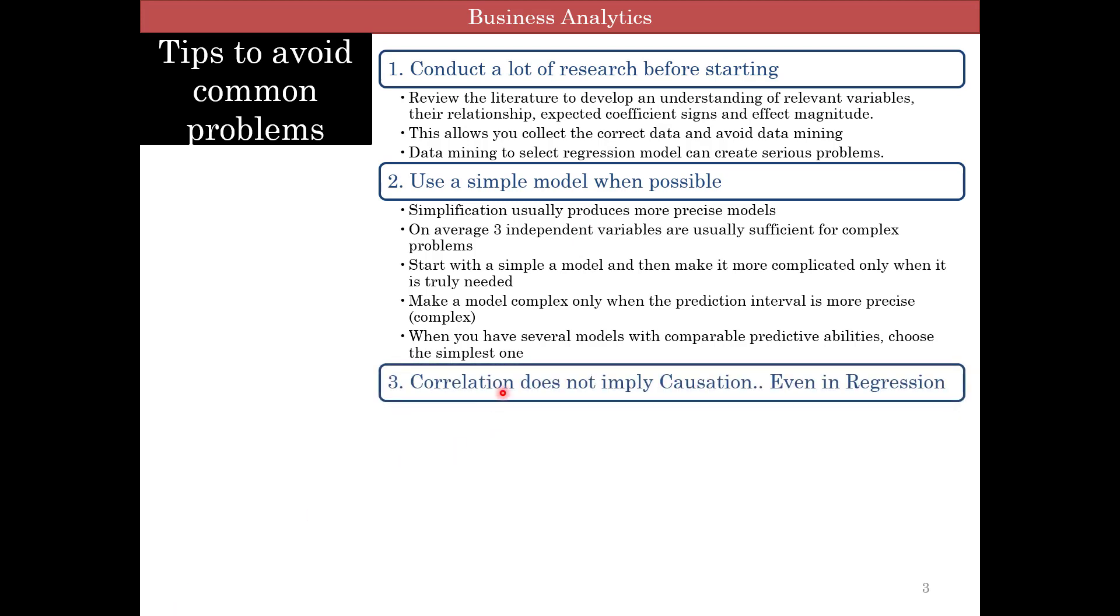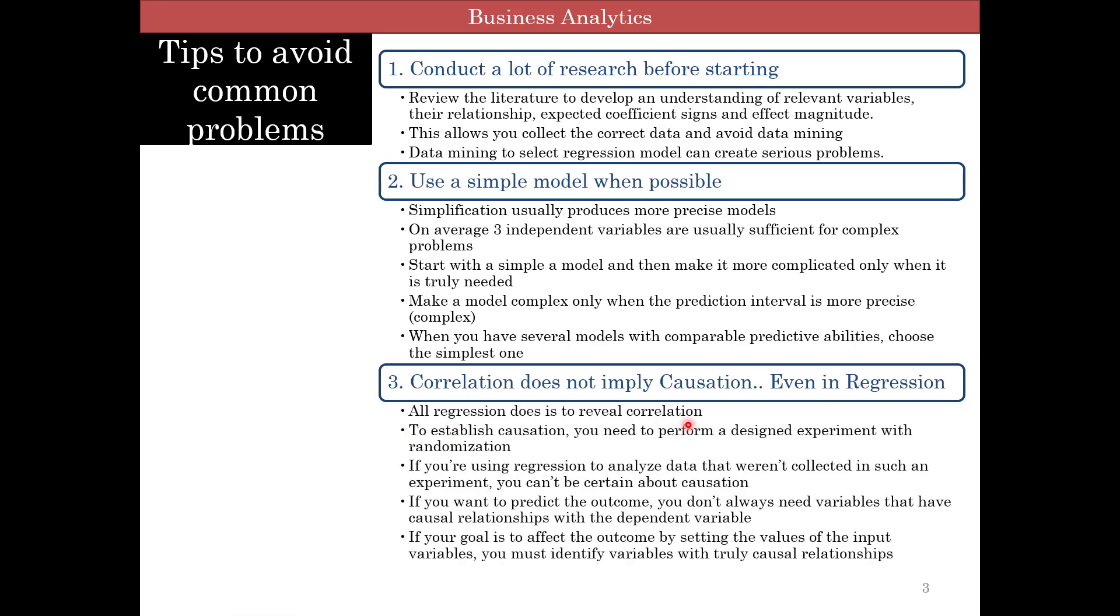Third, most important, just because something is statistically significant does not mean that one causes the other, even for regression. All regression does is reveals correlation. To establish causation, you need to perform a design experiment with randomization. If you're using regression to analyze data that wasn't collected in an experiment, you cannot be certain there is causation.